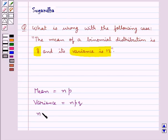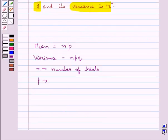Where n is the number of trials, and p is the probability of getting success.